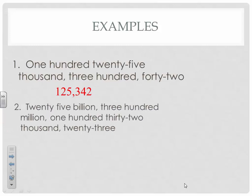Twenty-five billion, three hundred million, one hundred thirty-two thousand, twenty-three — that is a mouthful right there. Hit pause and see if you can write down what that actual number is. There it is: 25,300,132,023. Make sure you have the zero here with the twenty-three — that throws kids off.